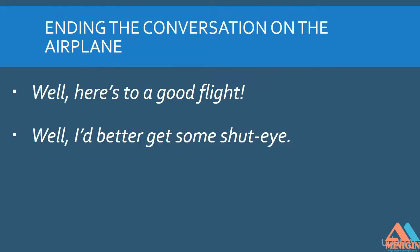To end the conversation on an airplane: the airplane is a little awkward because it is very difficult to ignore the other person. So this signals to the other person that you want to stop talking for now. It is expected that later you may start talking again. 'Well, here's to a good flight.' Then you might pick up your newspaper and start reading — some body language goes along with this. Or: 'Well, I'd better get some shut eye,' which means 'I want to sleep.' These are two ways to end the initial conversation.